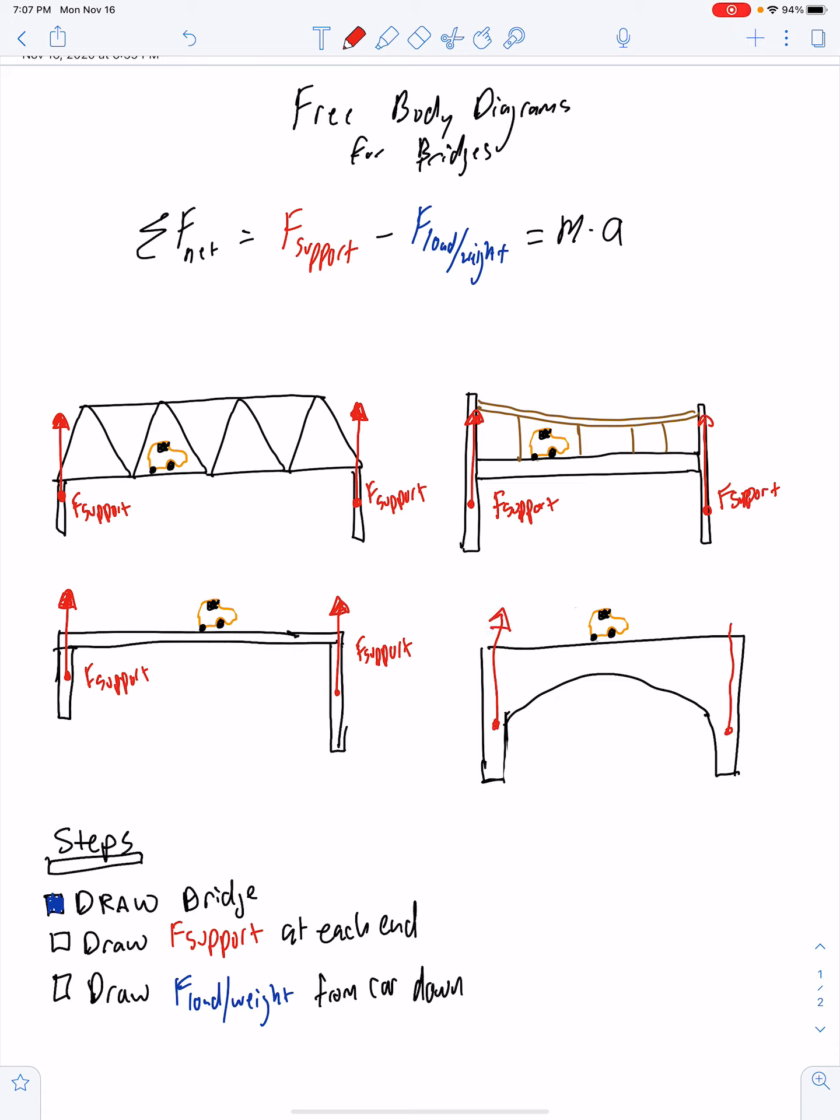So regardless of how your bridge looks, all you need is these two support forces at the end. All right, once you've done that, the final step is to go ahead and draw the load and the weight. So we actually have two different loads here.